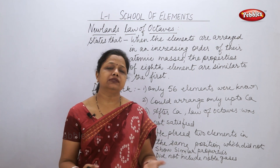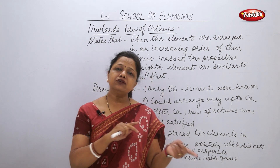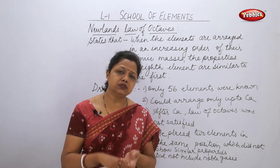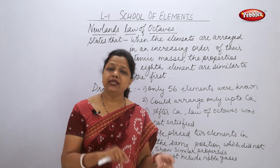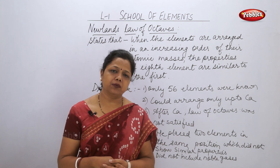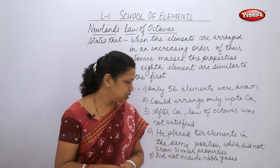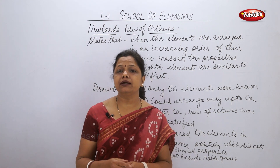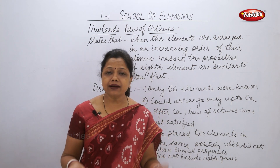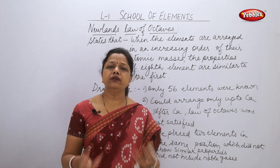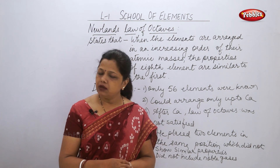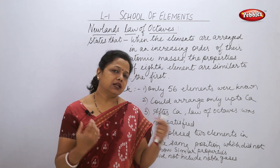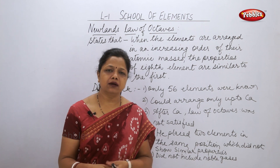Another problem was that he had placed two elements in the same position where there was no similarity between them. According to his law, every eighth element should have similar properties, so placing two dissimilar elements in the same position was a drawback. He also did not mention or include any noble gases, because at that time none of the 56 known elements were noble gases — noble gases had not been discovered yet. This was another anomaly, or drawback, of Newland's Law of Octaves.